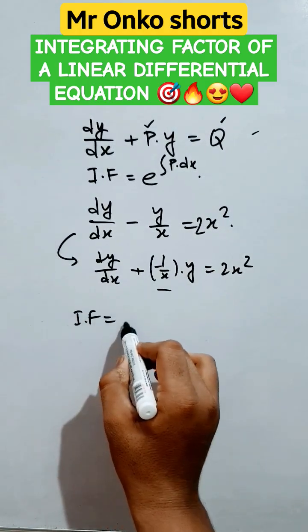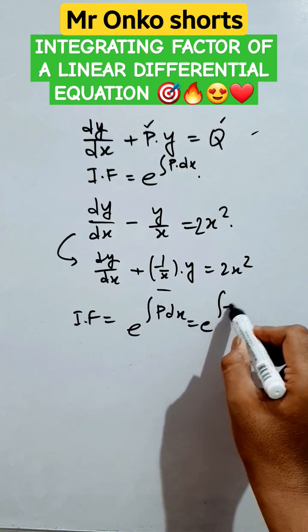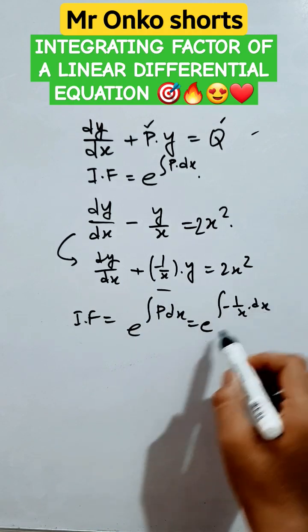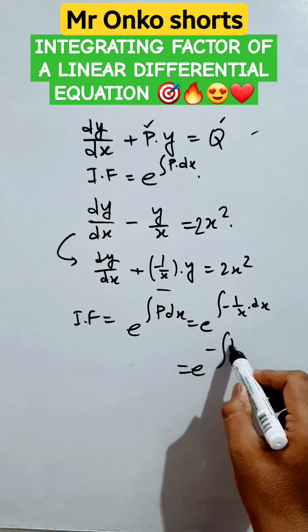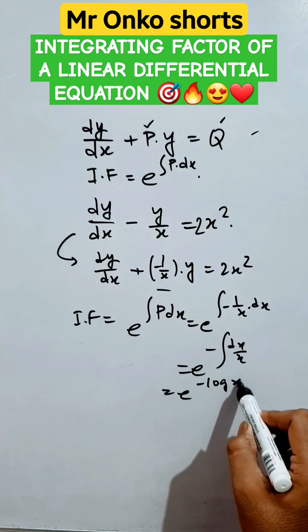The integrating factor will be e raised to the power integration P dx. So it will be e raised to the power integration minus 1 by x into dx. That will be equals to e raised to the power minus integration of dx by x. It will be e to the power minus log x.